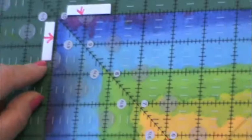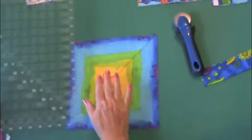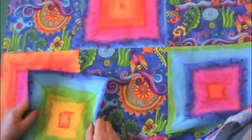So if I trim this side and this side, I'm going to have a perfect ten inch square and I'll be able to match it up with my focus print.